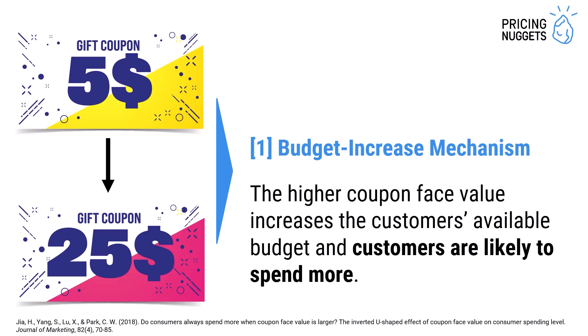The budget increase mechanism means the following. You increase the coupon value from $5 to $25, which basically means you give your customers $20 more for spending. The budget increase mechanism means customers have a higher budget, so they can spend more money and they buy more expensive products.